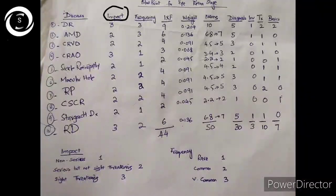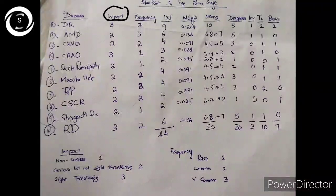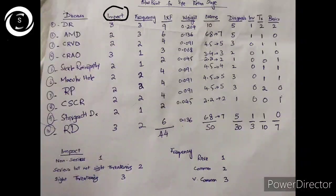The second column shows the impact — how serious the condition is. If it is a non-serious, non-vision-threatening disease, it gets one mark. If it is serious but not too sight-threatening, it gets two marks. If it is a sight-threatening condition, it gets three marks of impact. For example, diabetic retinopathy has an impact of three, and central retinal artery occlusion and retinal detachment also have an impact of three, because the patient can go blind if not urgently treated.